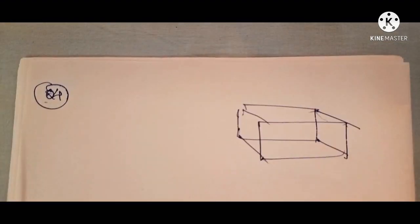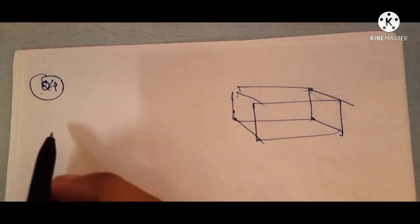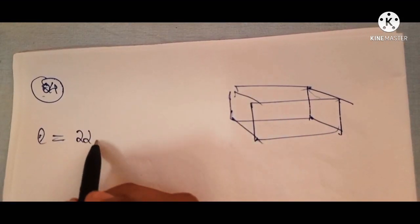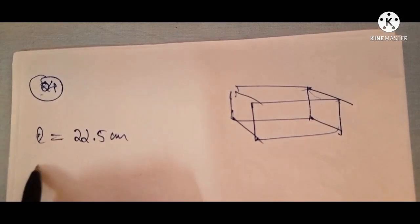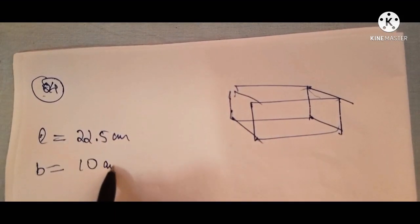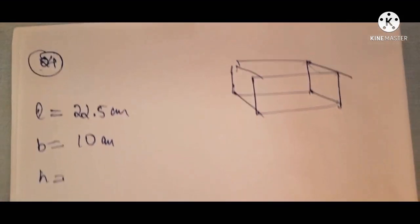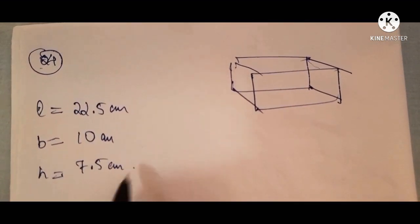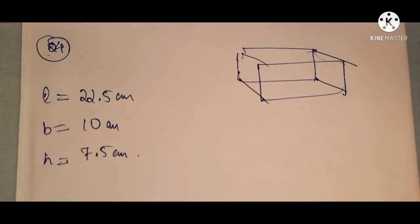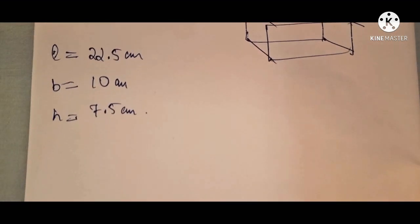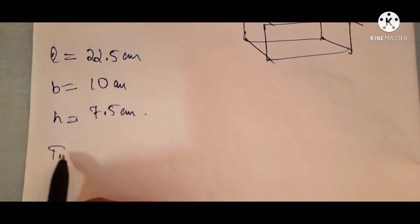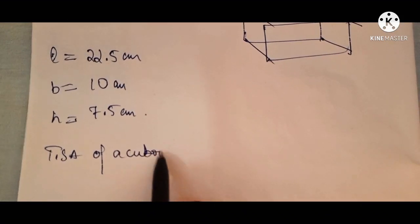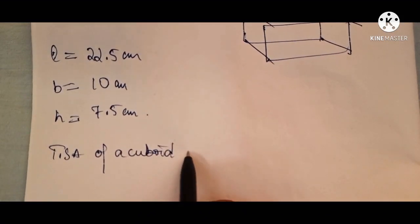The length, breadth, and height are given here. The length is 22.5 centimeter, the breadth is 10 centimeter, and the height is 7.5 centimeter. Now we'll find out the total surface area of a brick.